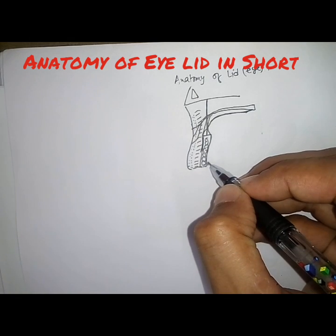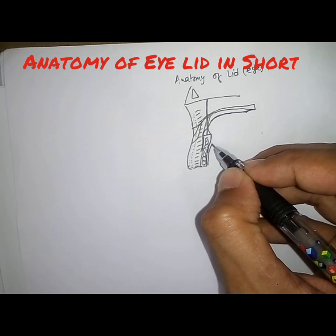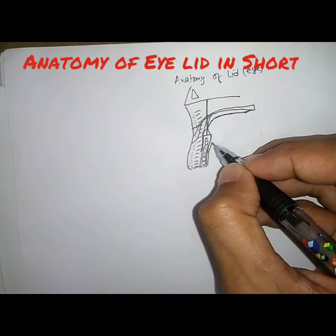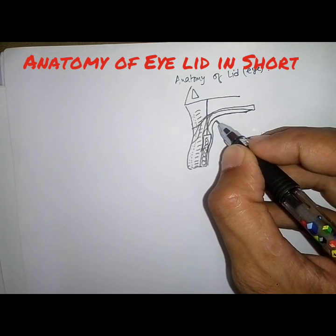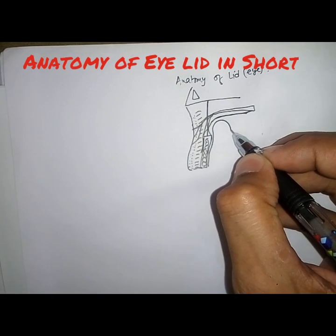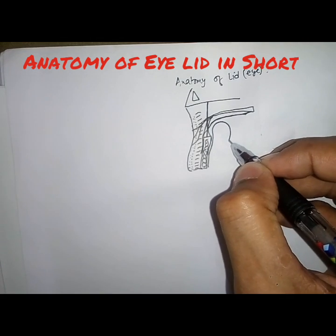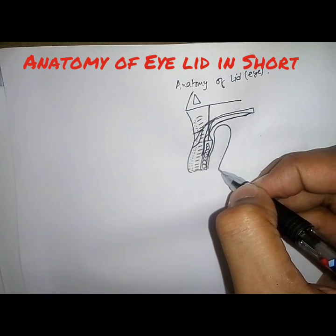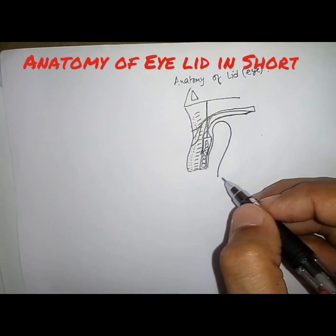Then there is the palpebral conjunctiva, which goes upward and becomes the fornix, and then becomes the bulbar conjunctiva, extending up to the limbus.